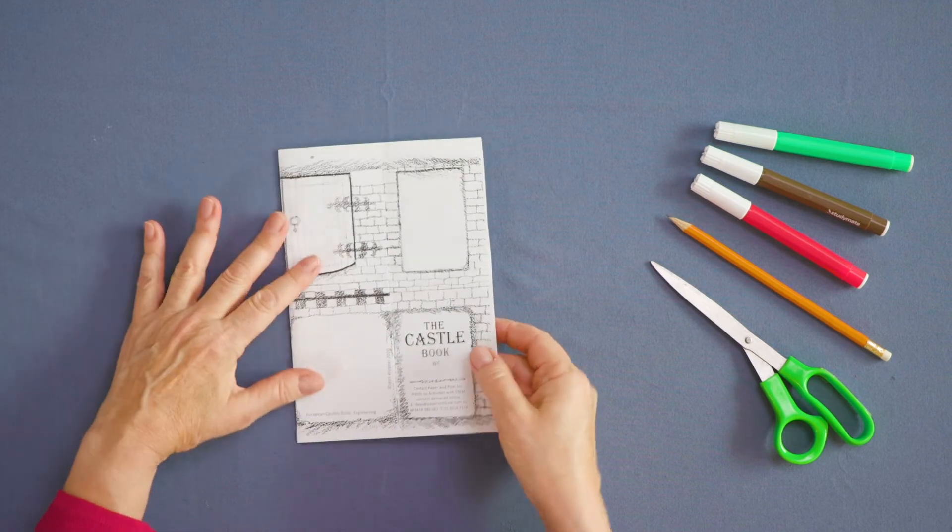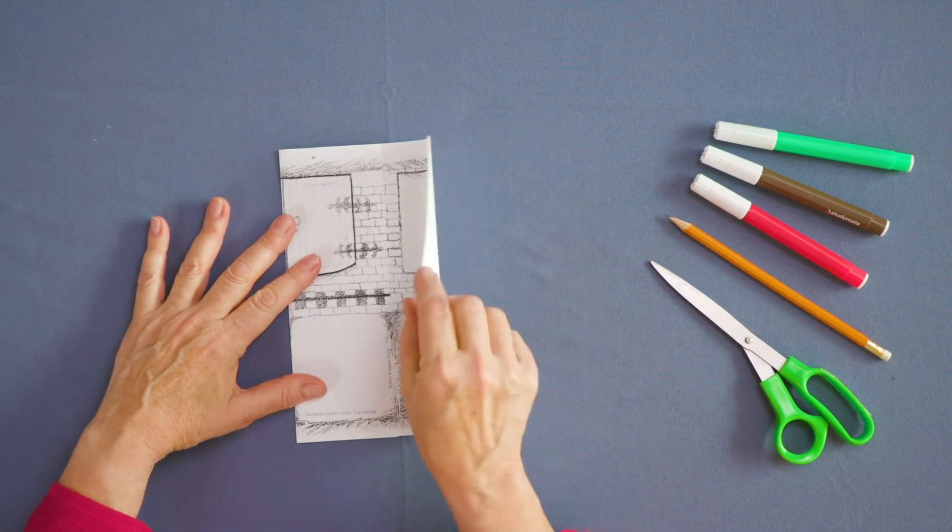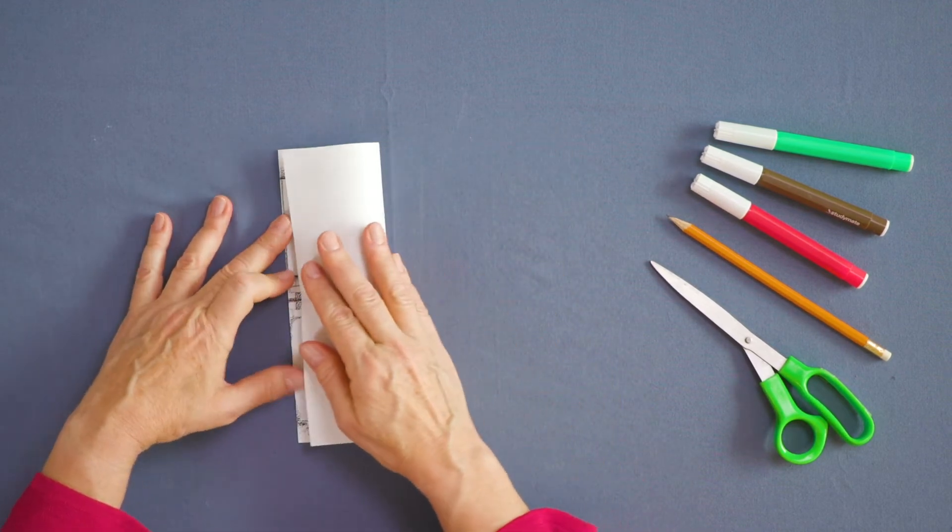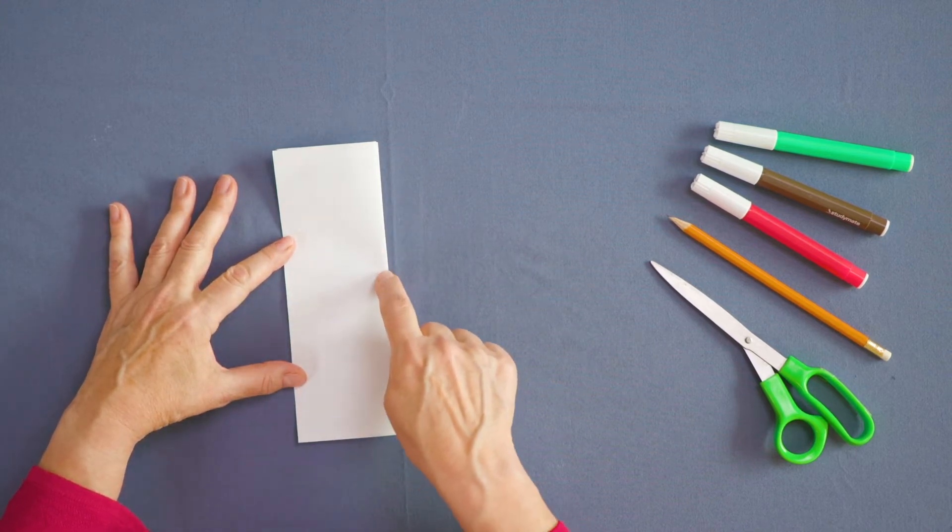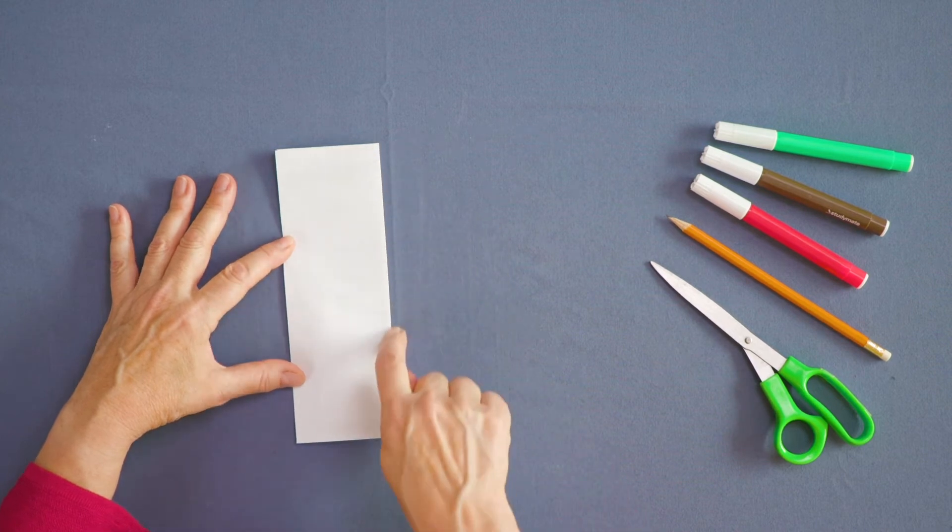Fold the top of the template in half towards the fold. Match the corners. As before, crease the fold by running a fingernail up and down to each end, pressing hard.